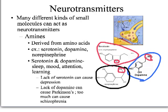Serotonin and dopamine affect your sleep, mood, tension, and learning. A lack of serotonin can cause depression. A lack of dopamine can cause Parkinson's disease. Too much dopamine can actually cause schizophrenia. So there's a nice balance that has to happen with the levels of neurotransmitters in the brain; otherwise you get diseases and other side effects.